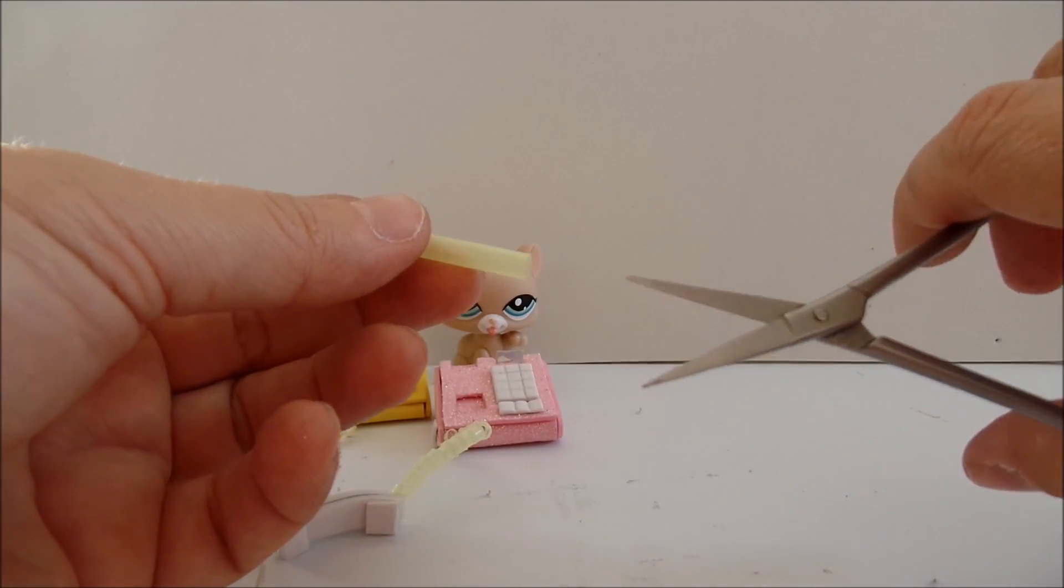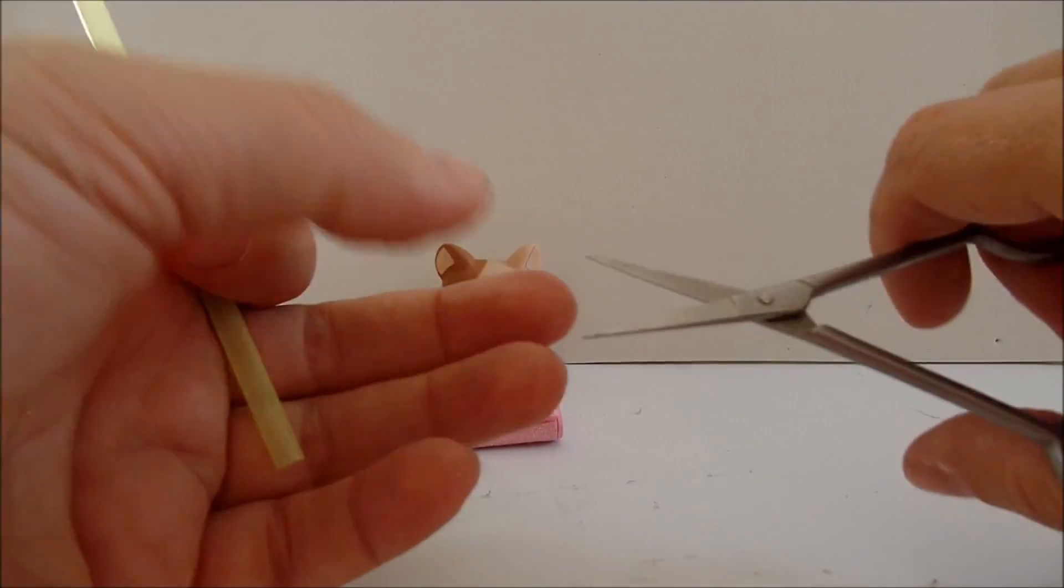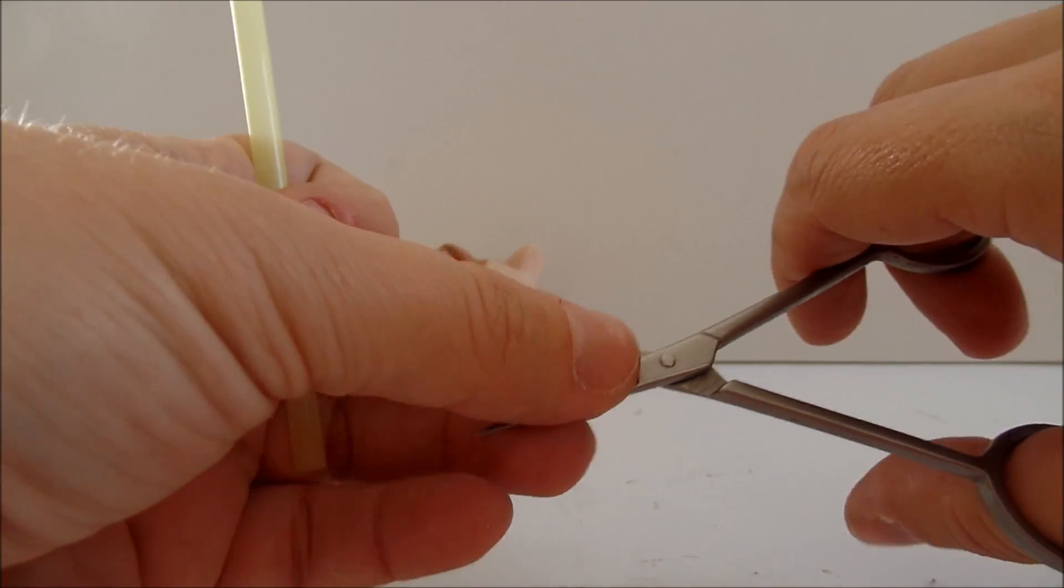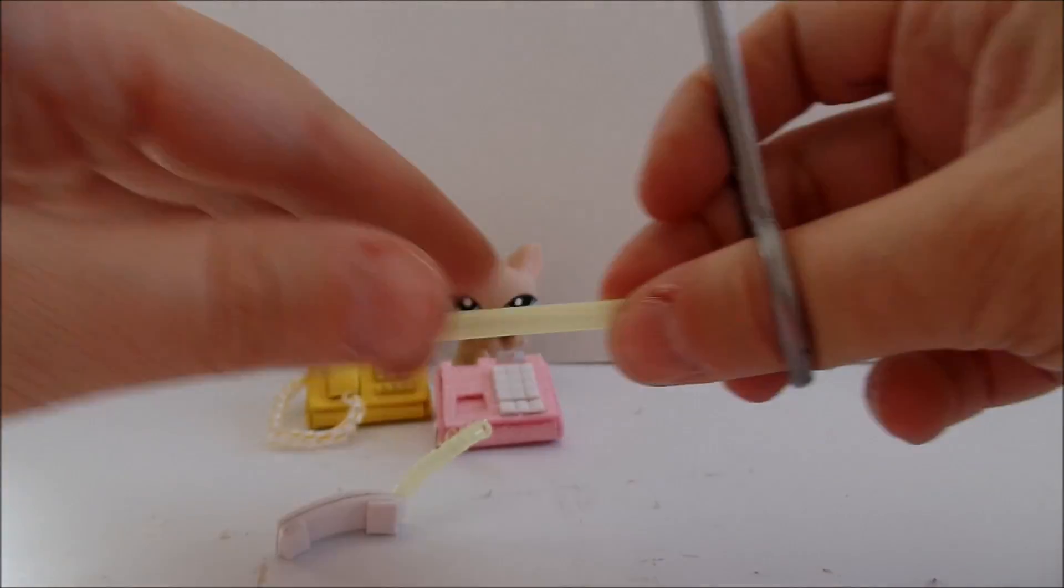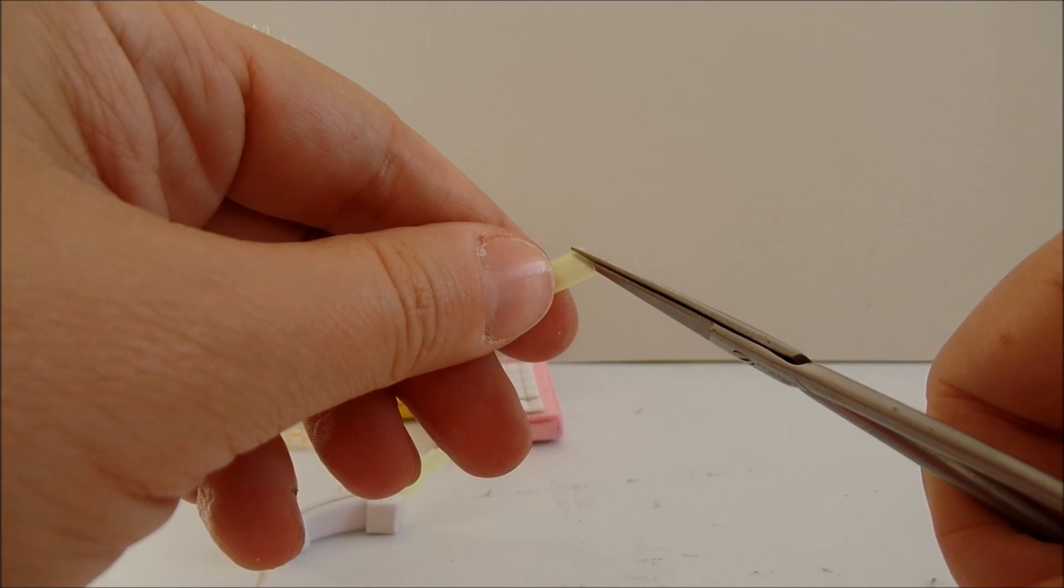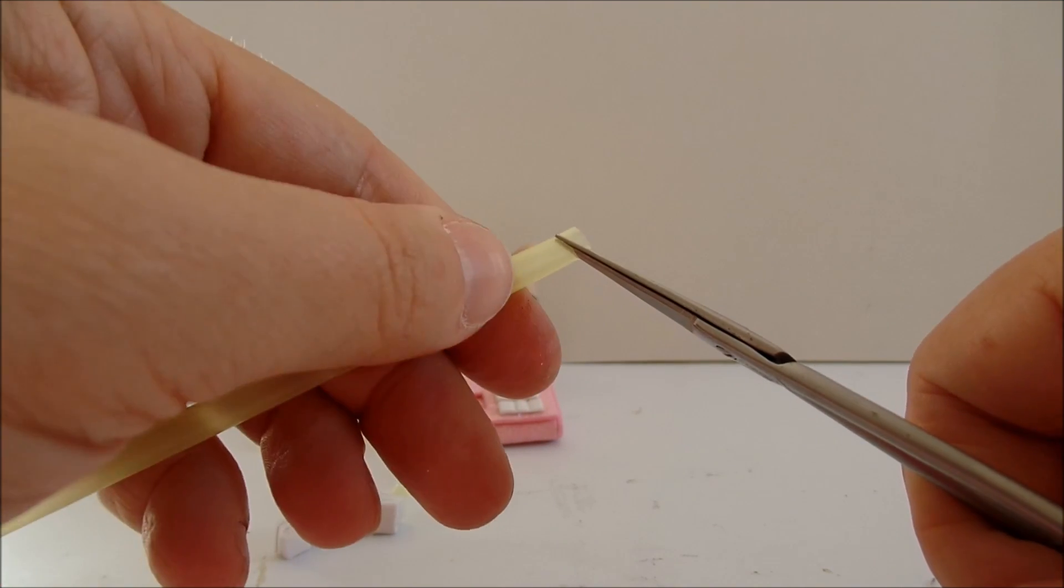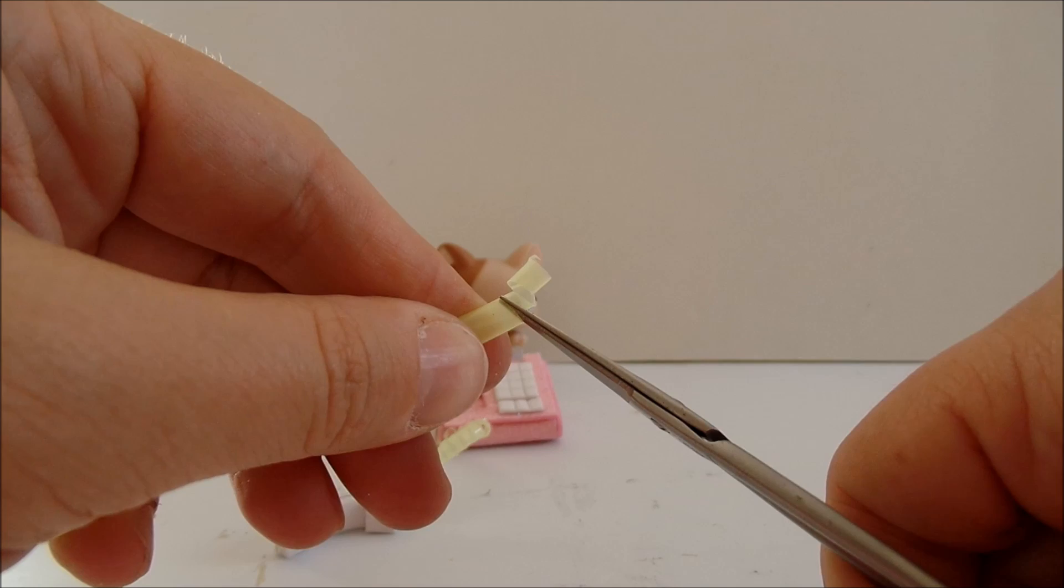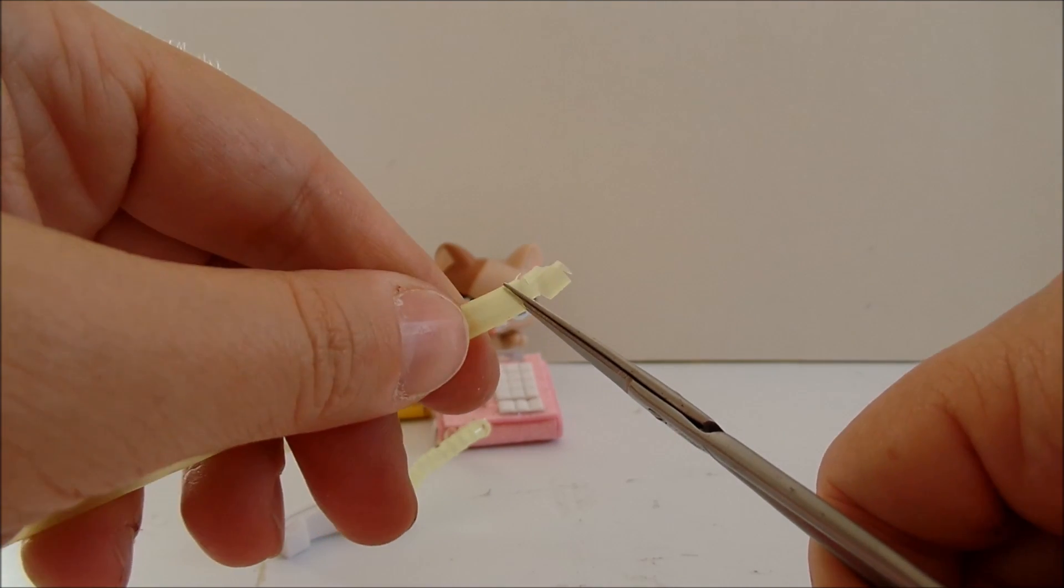I will start with the cord. You will need these really small sharp straight scissors and the straw. Start cutting the straw. The cut should be very thin.